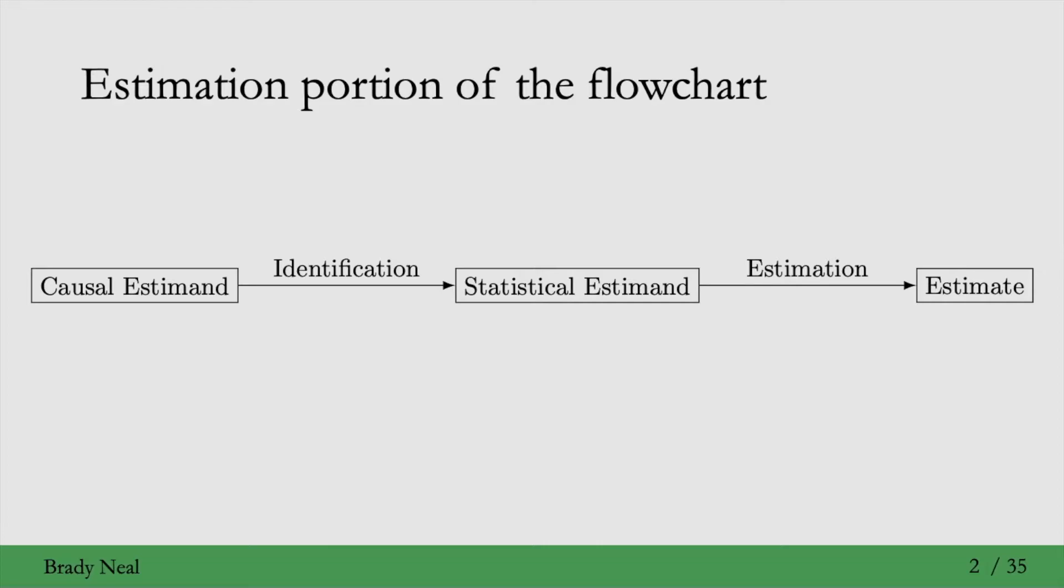We'll start with recalling the identification estimation flowchart, where we start with some causal estimand, some causal quantity of interest that we're interested in estimating, and then we identify that quantity by turning it into a statistical estimand. That's a quantity that doesn't have any potential outcomes or do operators in it. This is what we've been focusing on for the last few weeks, with the exception of specific examples where we actually did estimate causal effects. Now, in this week, we'll be focusing on the estimation portion of this flowchart, so that's where we take some statistical estimand and turn it into an estimate, an actual number that we'll use to report our causal effect.